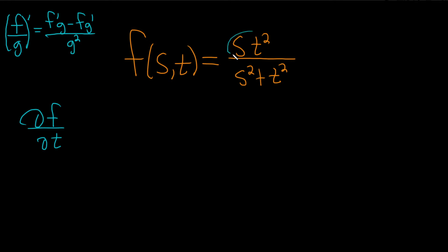So here, this is our top function, and we're taking the derivative with respect to t. So that means that all of the other variables are constants. So in particular, all of our s's are constants.